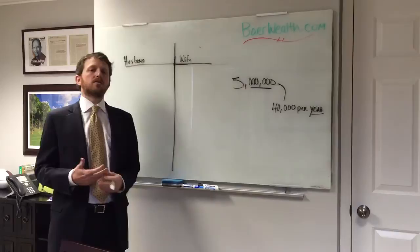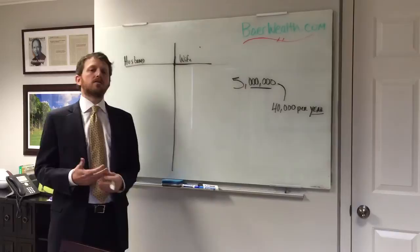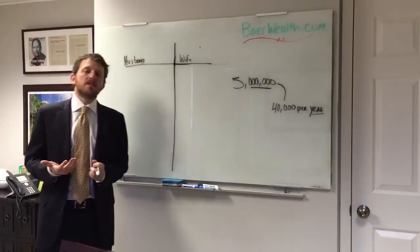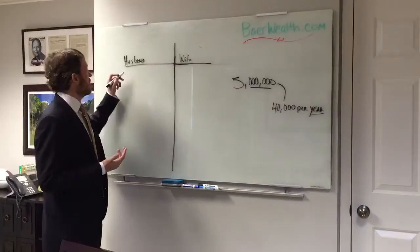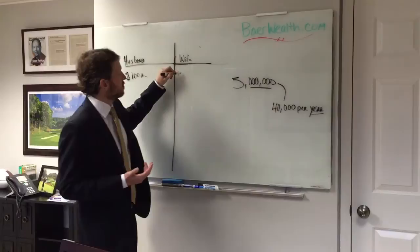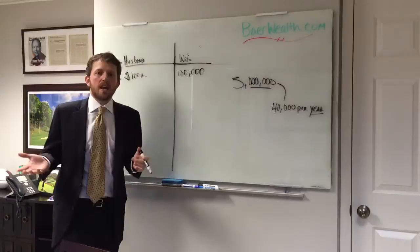So I was trying to think about how that relates to our clients and to really the general public out there and think about it in terms of dual income. A lot of times we may have a husband making around $100,000 a year and the wife making around $100,000 a year. And how can you save one of those salaries and live off of the other?